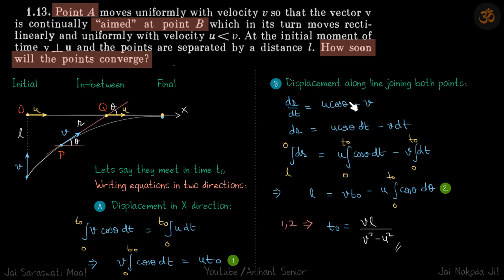So we take dt there and then again integrate, this time with limits of r. So the gap between them initially is l and finally it is 0. So limits are l to 0 and here the limits of the time are 0 to t0. So we get our second equation: l is equal to vt0 minus u integral cos theta dt.